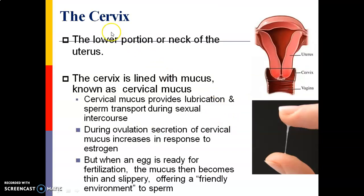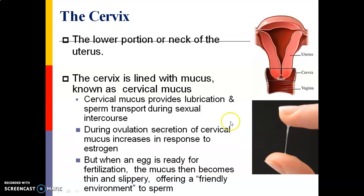Now let us look at the cervix. The cervix is the lower portion or neck of the uterus. It is lined with mucus known as cervical mucus. Cervical mucus provides lubrication and facilitates sperm transport during sexual intercourse.